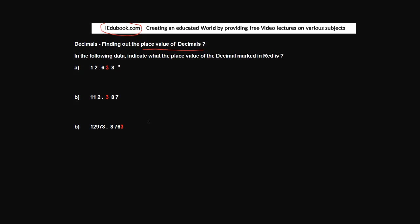Coming back to the question, in the following data indicate what the place value of the decimal marked in red is. So in each of these numbers there is one digit which is marked in red, incidentally 3 in all the cases. You have to find out what is the place value of this decimal.